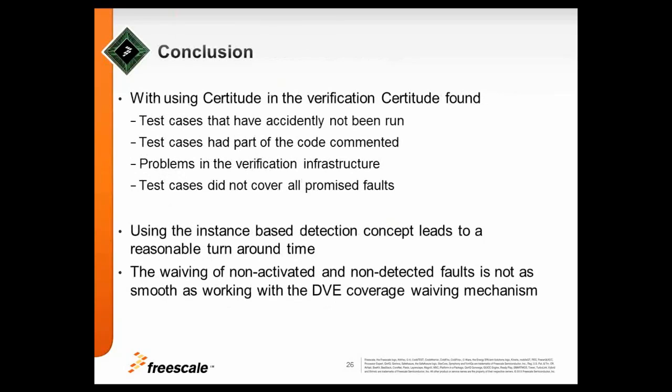Conclusion. What have we found? We had a lot of test cases that we reused from module level. And sometimes you forget one or the other because it's maybe a feature-based test case. And you think that this feature is not used, but it is used. You find test cases passing by commenting the error message. And you find problems in the infrastructure. This instance-based detection helps us to get to a detection result in a reasonable time. I think there's more on this. I don't know if the new version is addressing this. The waiving of undetected faults is still cumbersome. I would like to have it like we have in DVE, where you can use the GUI and store a file, and say, okay, this is what I have covered. Right now, you have to create TCL code by hand, which is not as nice.